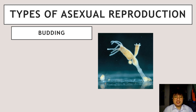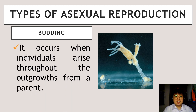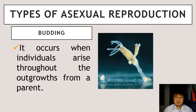For asexual reproduction, there are many types involved. The first one is called budding. In budding, it occurs when individuals arise throughout the outgrowths from a parent. The offspring is born from a bud or extended parts of the parent, as we can see in this organism. The bud is an outgrowth or extension of body parts that eventually breaks off and forms a new offspring or organism.